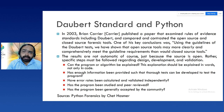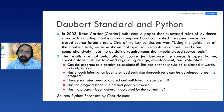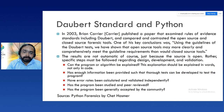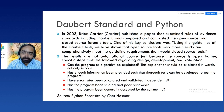The results are not automatic — specific steps must be followed regarding design, development, and validation. The questions are: can the program or algorithm be explained in words, not only in code? Has enough information been provided so that thorough tests can be developed? Have error rates been calculated and validated independently? Has the program been studied and peer reviewed? Has it been generally accepted by the community? The source for this information is the book by Chet Hosmer on Python Forensics.